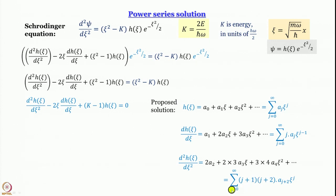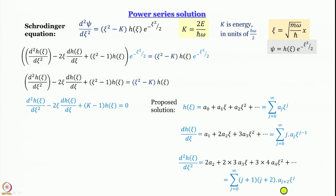Checking the second term (j=1): (1+1)(1+2)·a₃·ξ = 2×3·a₃·ξ, which is correct. For the third term j=2: (2+1)(2+2)·a₄·ξ² = 3×4·a₄·ξ². Please satisfy yourself that this is really the expression for the second derivative.